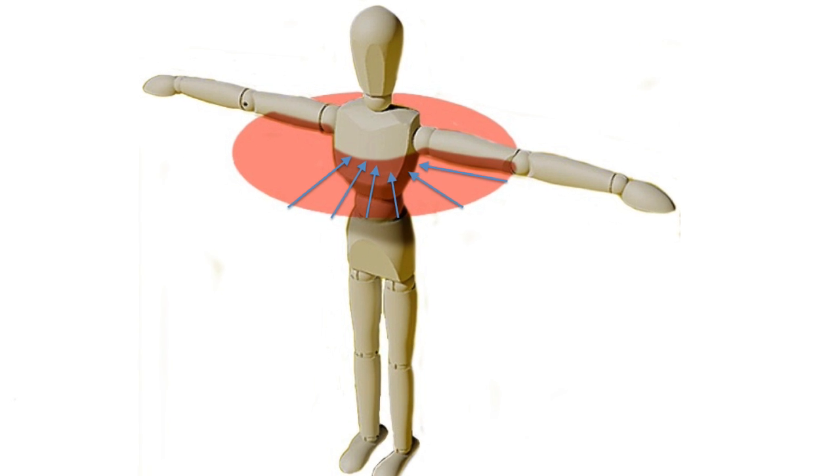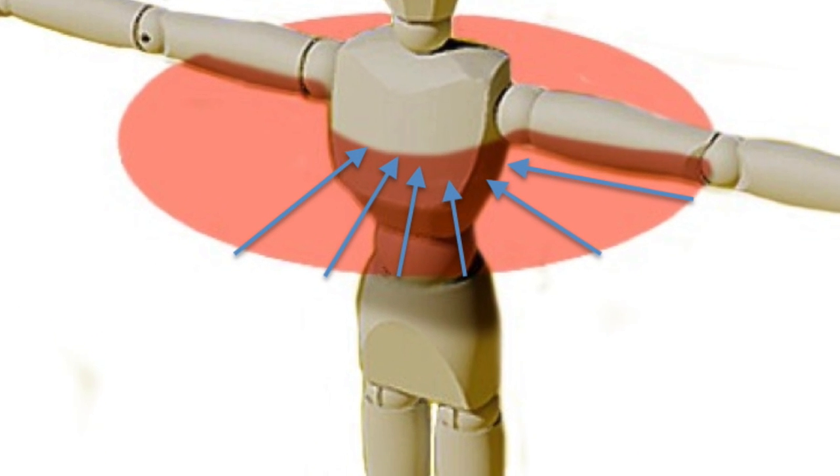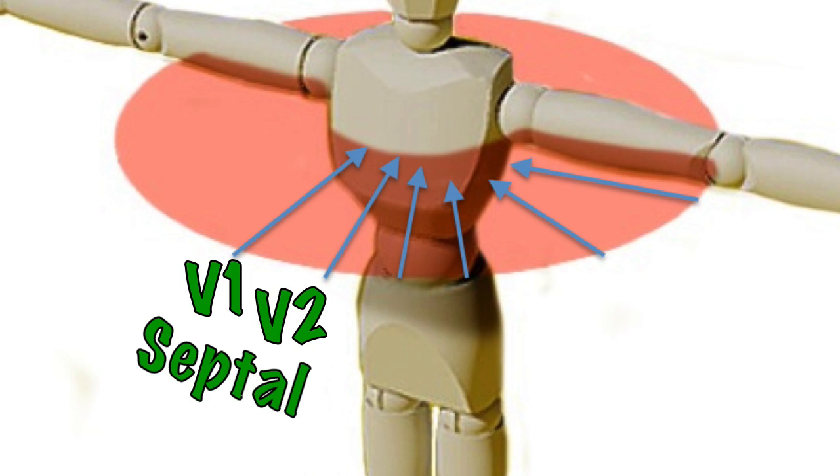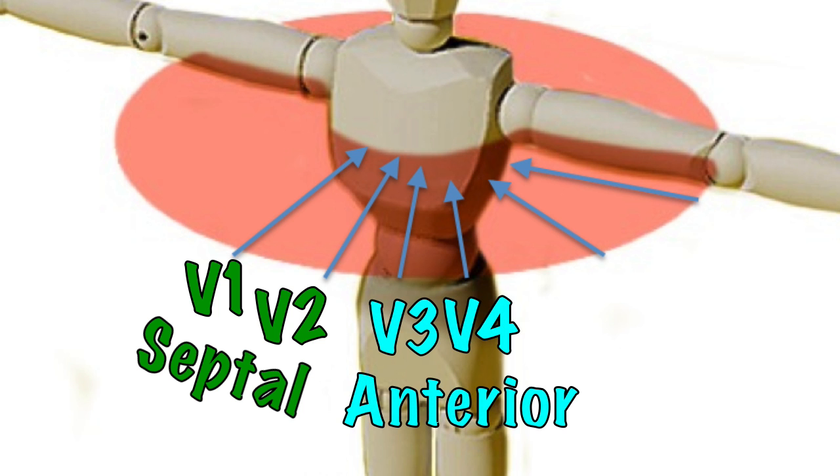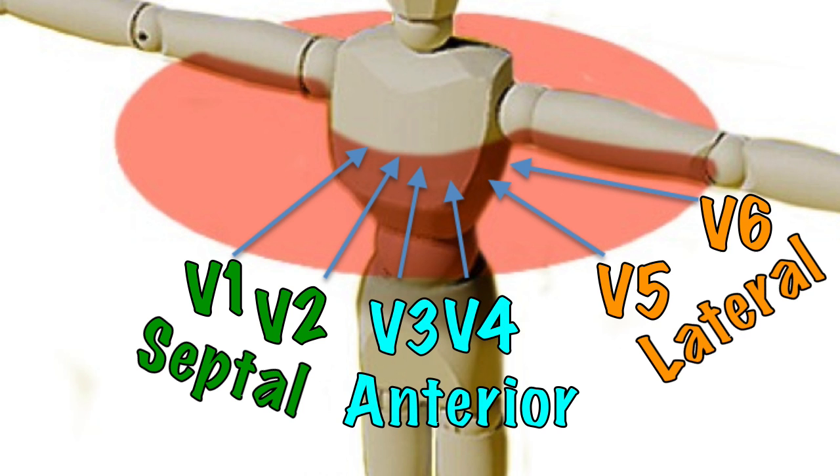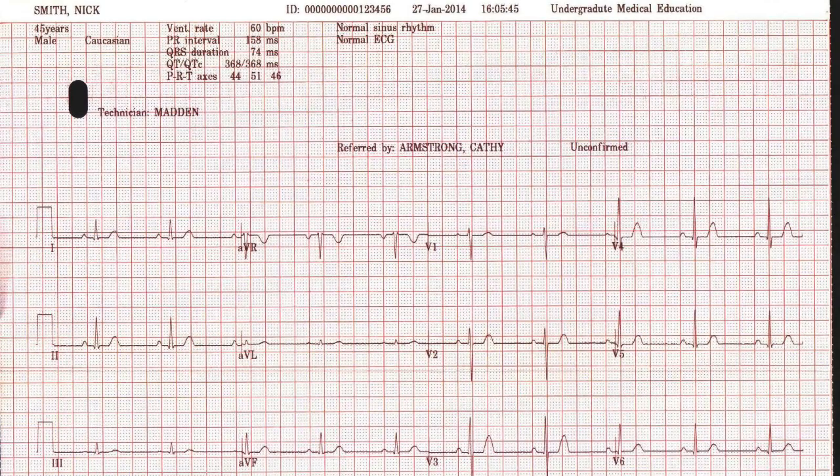There are 6 physical chest leads which look at the heart in the horizontal plane. V1 and 2 look at the heart in the middle or the septum. V3 and 4 look at the front or anterior plane of the heart. V5 and 6 look at the side or the lateral plane. All of these tracings are then recorded on your ECG like this.